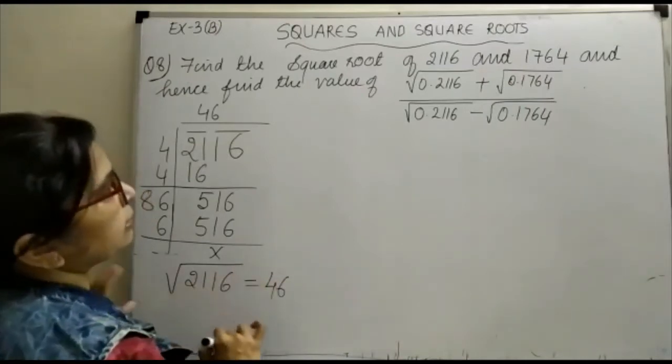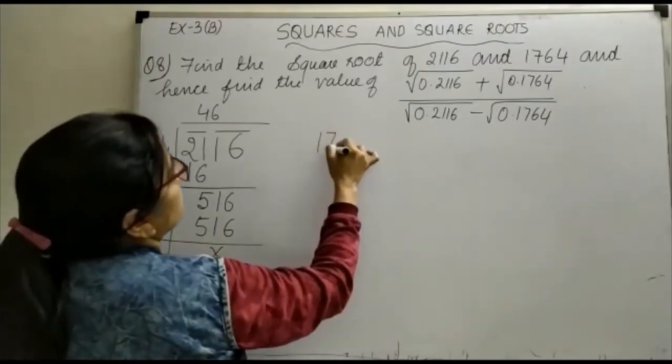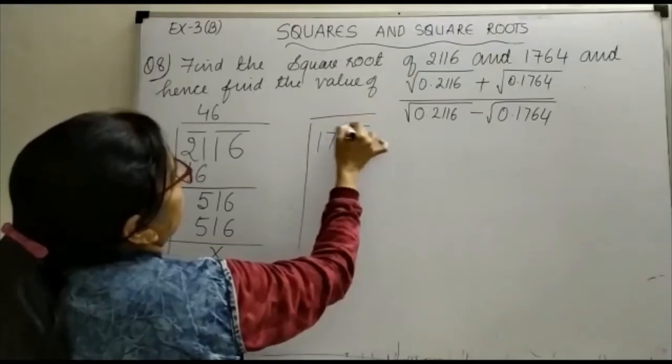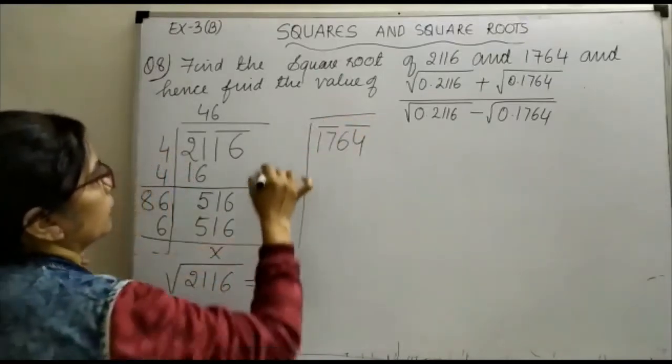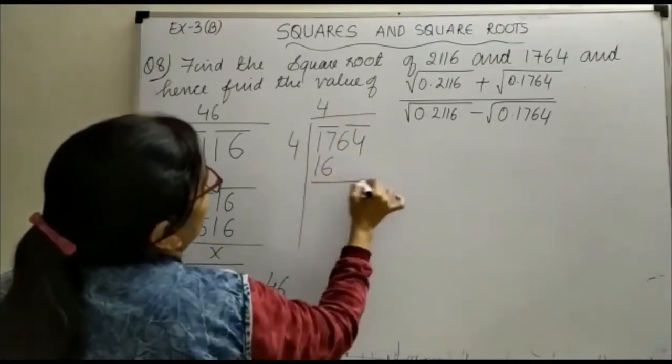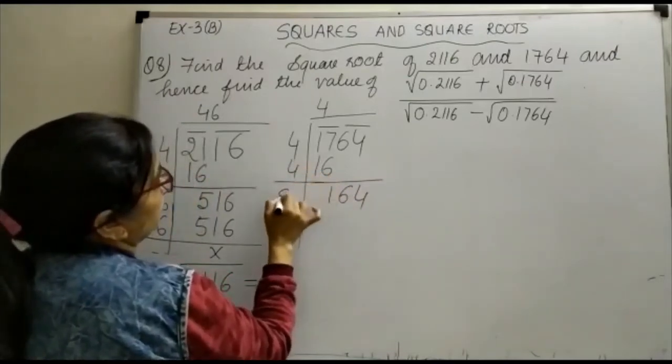In the same way we will work out for 1764. 1764 के लिए भी आप pairing कर लीजिए. ऐसा number लीजिए जिसका square 17 से कम होगा, तो यह आपका हो जाएगा 4. 4 times 4 is 16. यह आपका यहां पर 164, यहां पर आपने 4 रखा, यह आपका होगा 1.